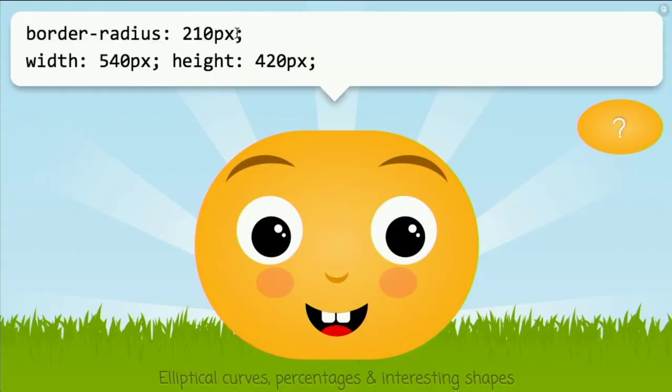However, the BorderRadius rabbit hole goes deeper than that. If we wanted to make an ellipse, an ellipse is not possible to make through parts of a circle, which is what I've shown so far. However, if we use a slash, we can specify different horizontal and vertical radii, so effectively we can make shapes out of parts of ellipses instead of parts of circles.